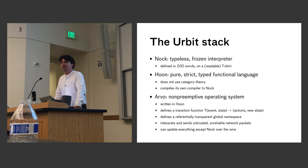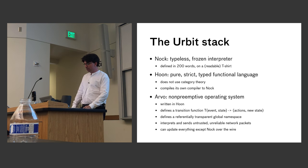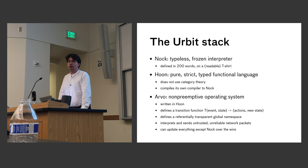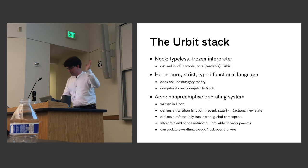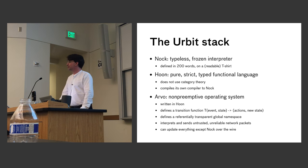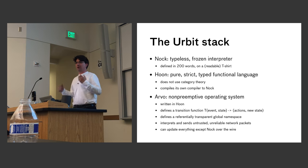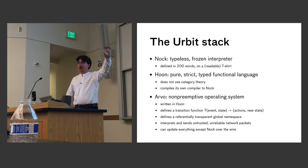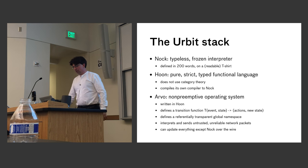So the bottom of the stack is this thing called Nock — a typeless, non-lambda interpreter defined in 200 words. It fits on a t-shirt. On top of that is Hoon, a pure strict higher-order typed functional language that compiles itself to Nock — this is typed functional programming without category theory. On top of that we have Arvo, a non-preemptive OS. I'm going to do a lightning tour through these three systems.